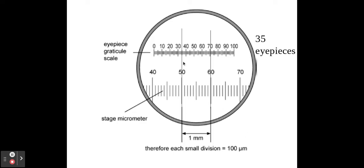Here you can see that I've got 35 eyepieces between these two lines, and I know that those 35 eyepiece lines is equal to one millimeter. So if I know that 35 eyepieces equal one millimeter, I then therefore know that one eyepiece is equal to 0.0285 millimeters.